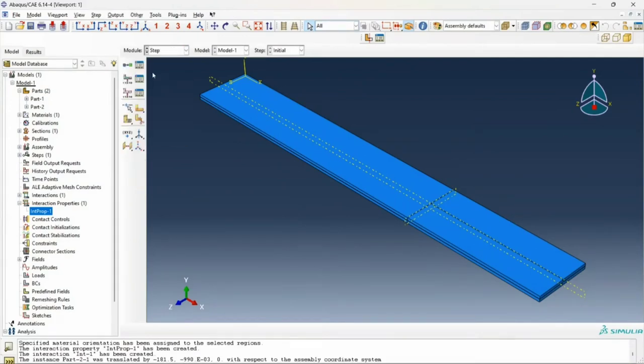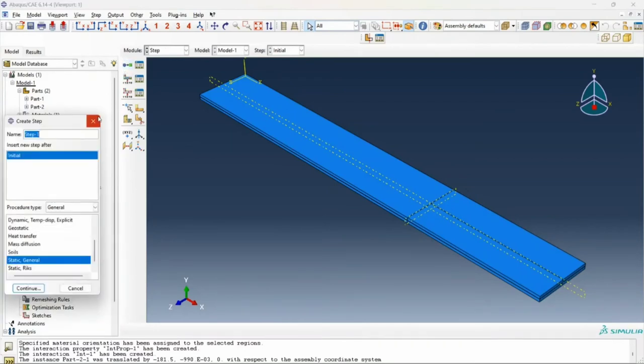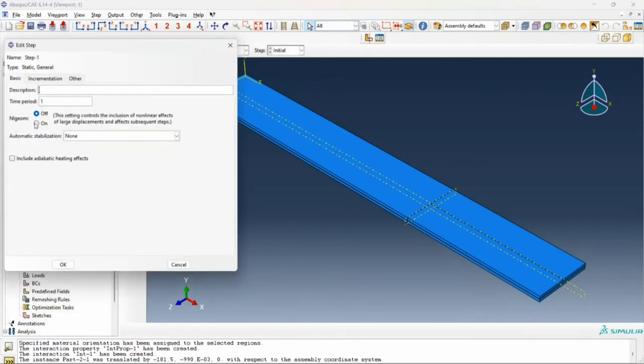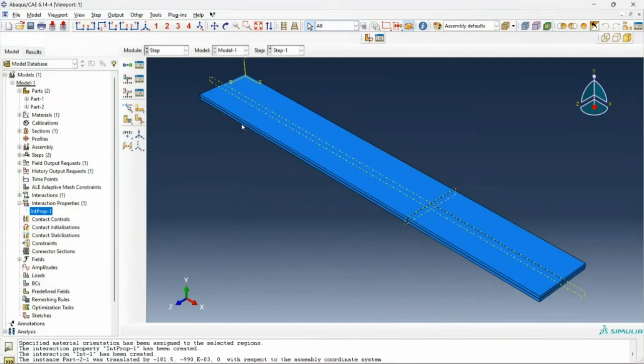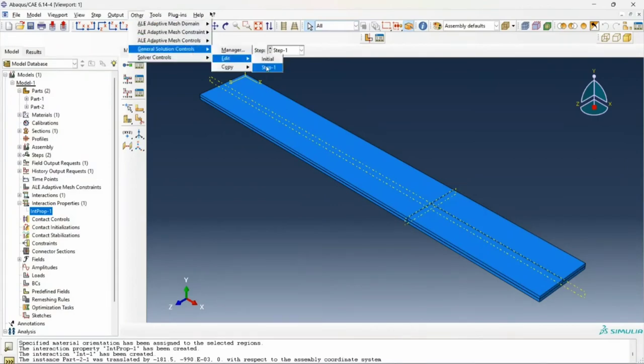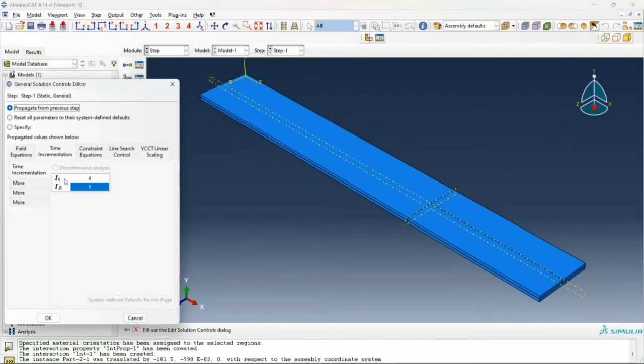Next, I click on step and I define a new step. I create a new step. This will be a static general type step. I will toggle on nonlinear effects since we have large deflections here. Automatic stabilization will be by specified dissipated energy fraction, and I'll define a lower initial increment. For better stability and convergence, we can also go to other general solution controls and edit my time step, where I go to the time incrementation tab. Click on specify, change my I0 to 20, my IR to 40, and my IA also to 20.